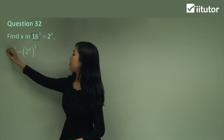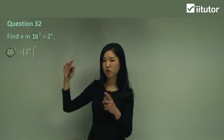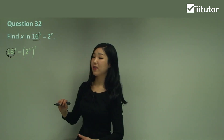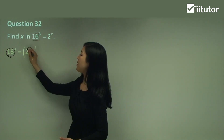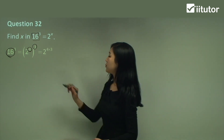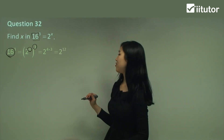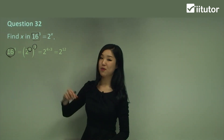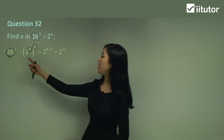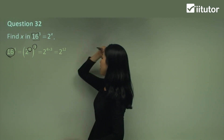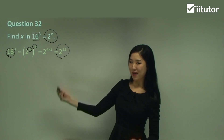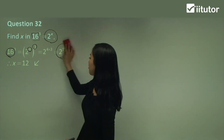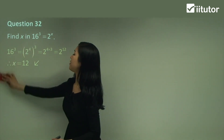I'm going to replace 16 with 2 to the power of 4, using brackets to separate it out with the cube. So now we have something familiar. The law of powers says we multiply the inside power with the outside power, so I multiply 4 and 3 together, giving 2 to the power of 12. So whenever the base is not the same, make it the same by breaking it down into factors. Since the base is now the same, the indices must be the same, so x is simply 12. Remember that technique — it's very useful.